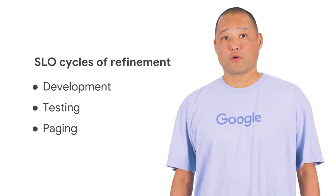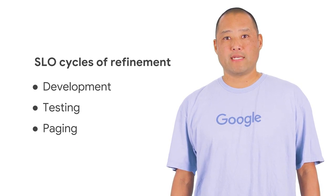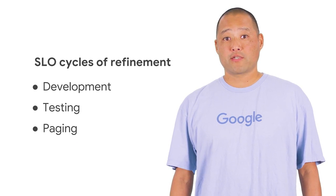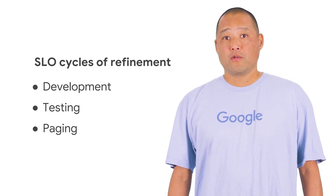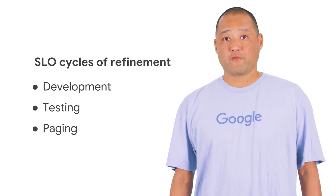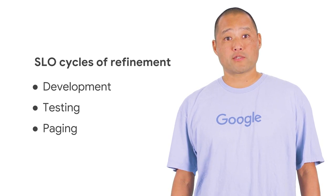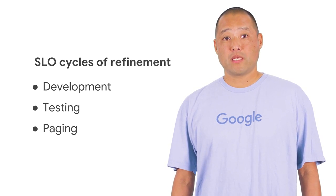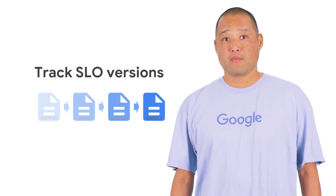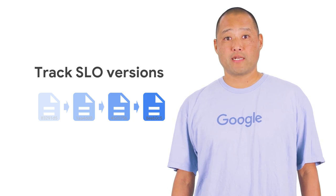It's important for your SLOs to have owners — people who are responsible for maintaining the documentation and ensuring the SLO stays meaningful and accurate. New SLOs often take a few cycles of refinement before they are committed to, so you should record whether the SLO is in development, is being measured or tested, or is paging someone. And since SLOs are intended to change over time, keeping track of previous data and why thresholds and justifications were changed is very useful too.